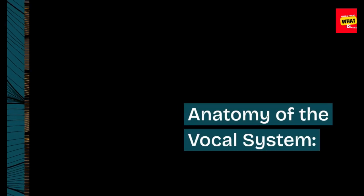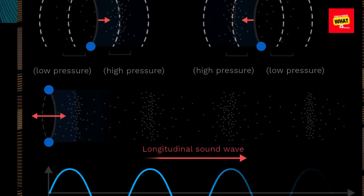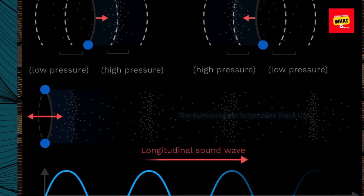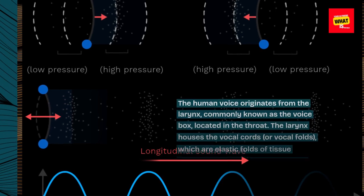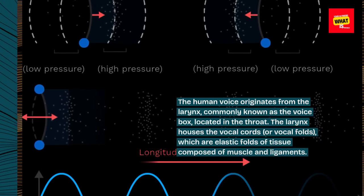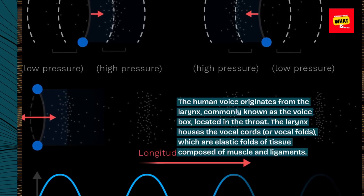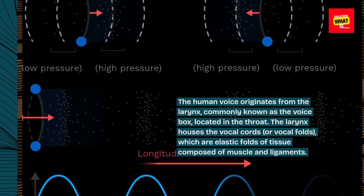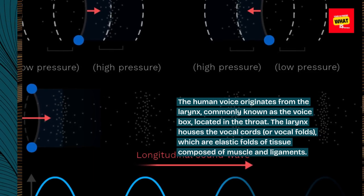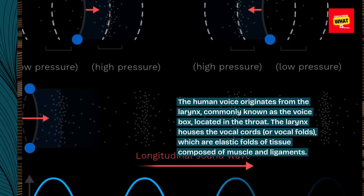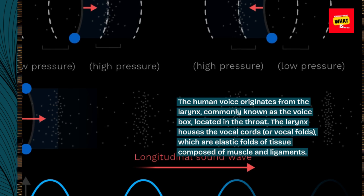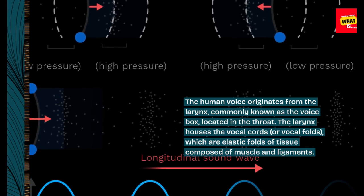Anatomy of the Vocal System: The human voice originates from the larynx, commonly known as the voice box, located in the throat. The larynx houses the vocal cords, or vocal folds, which are elastic folds of tissue composed of muscle and ligaments.